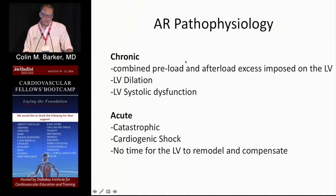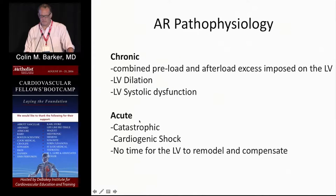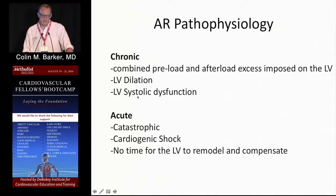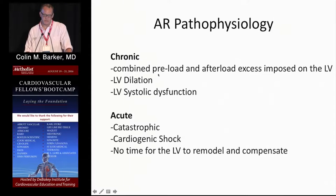As far as timing and pathophysiology, we mostly deal with managing the chronic cases. The acute cases are generally catastrophic cardiogenic shock patients — the LV hasn't had time to remodel. This can be seen in the setting of a dissection, so these patients have to go to surgery ASAP. The chronic cases are the real challenge, as AR has a combined effect on the left ventricle with preload and afterload excess leading to dilation as well as systolic dysfunction.